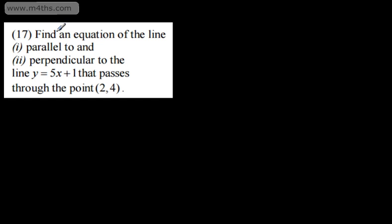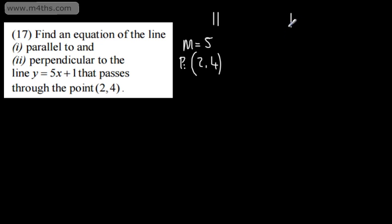We're asked to find an equation of the line (1) parallel and (2) perpendicular to y = 5x + 1, passing through the point (2, 4). For the equation of a straight line we need a gradient and a point. For the parallel line, the gradient m = 5 and the point is (2, 4). For the perpendicular line, the gradient m is the negative reciprocal, which is negative one fifth, and the point is again (2, 4).